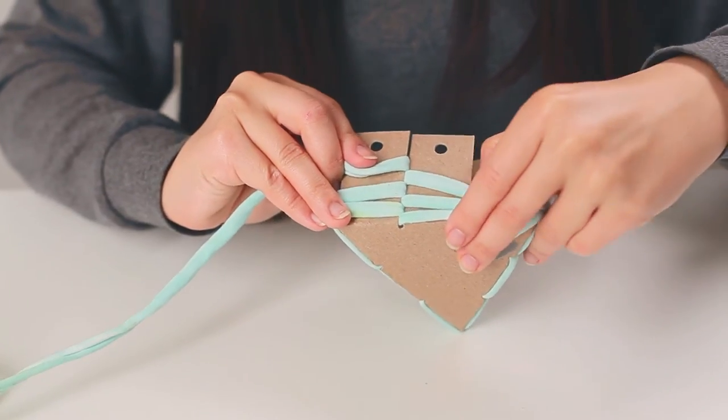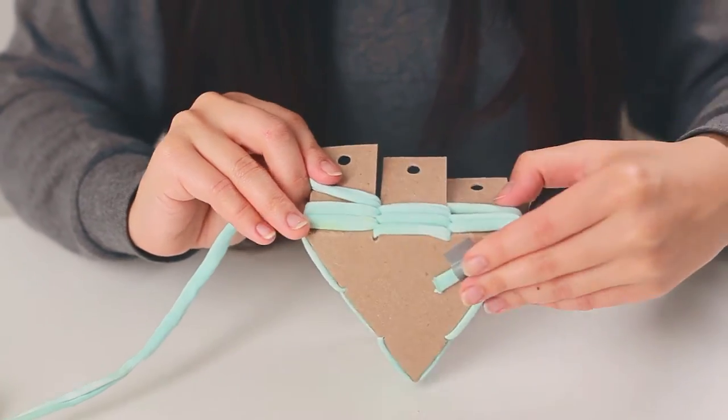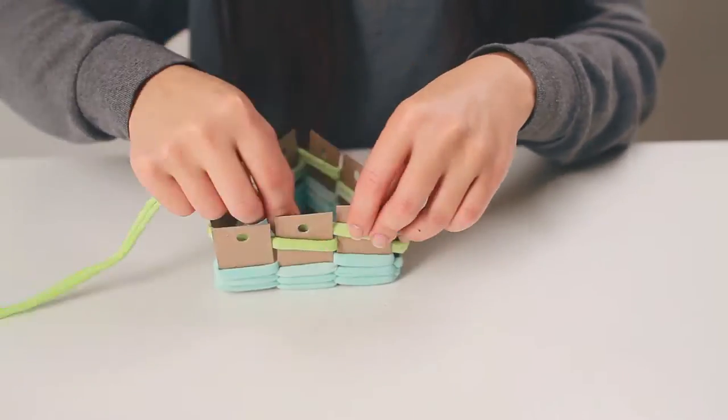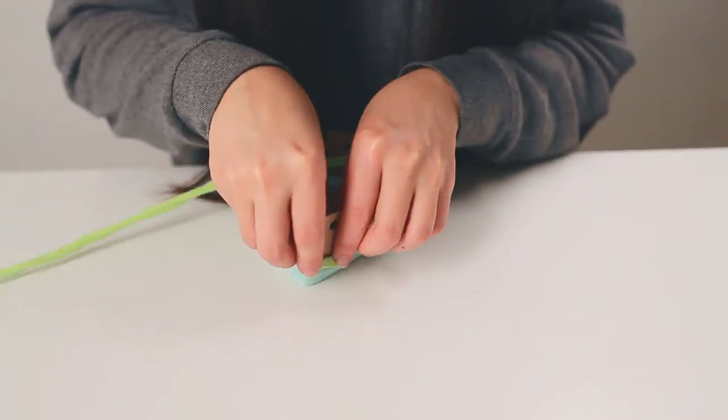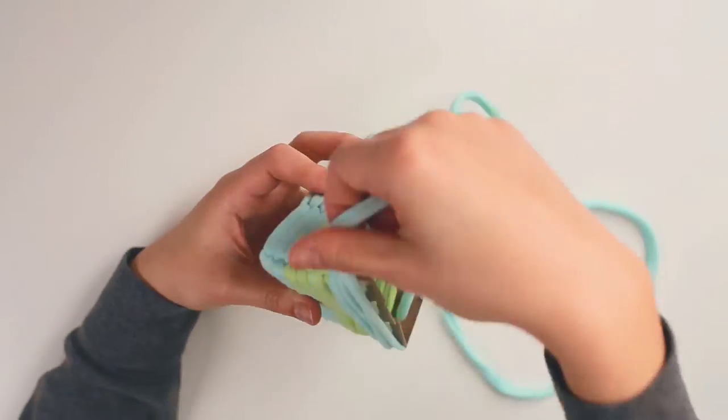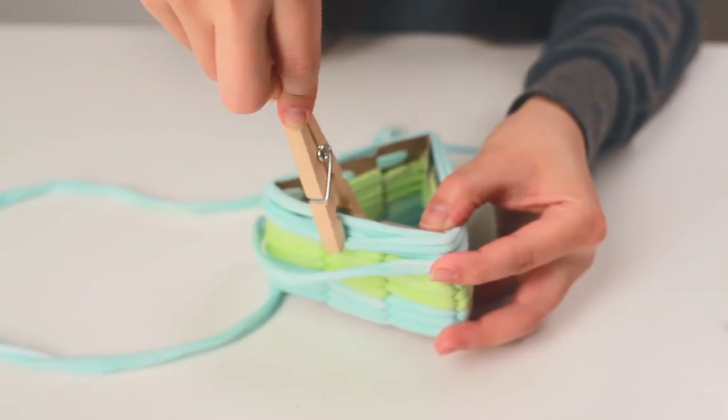Push the yarn down every few rows to make sure that none of the frame shows through. Stop weaving when you reach the holes at the top. Find the other end of your yarn and use your yarn needle to help you thread through the holes. Wrap the yarn around the top until it covers the rest of the frame.